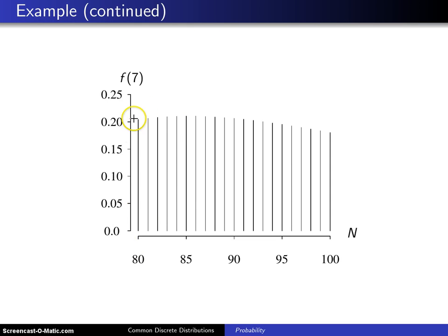And this spike right here, for example, is F of 7 when you have 80 animals in the population. The spike right here is the probability of getting exactly 7 when there are 81 animals in the population. And you will notice that this trails off. Its peak happens to be right here, and this occurs at N equals 86.